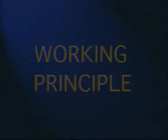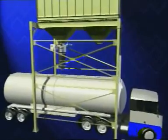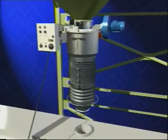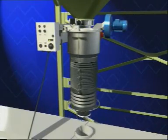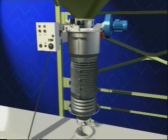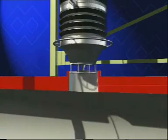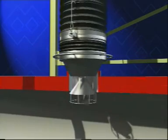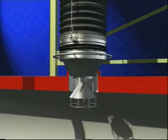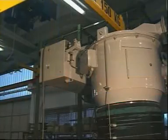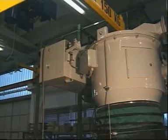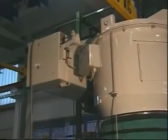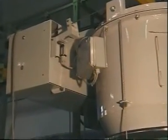The computer animation shows an example of fully automatic loading of a tanker. First, the loading bellow is lowered from the standby position towards the inlet port of the tanker. As soon as the bellow outlet cone has settled on the inlet port of the tanker, the cable limit switch mounted outside the transmission box stops the lowering of the bellow.